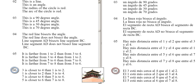3 is closer to 4 than 1 is to 2. 1 is closer to 2 than 3 is to 4. 7 is closer to 8 than 5 is to 6. 5 is closer to 6 than 7 is to 8.